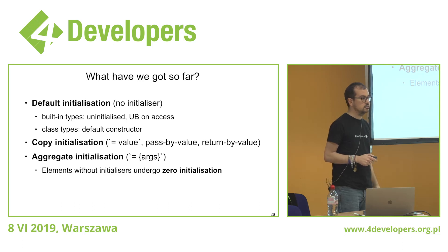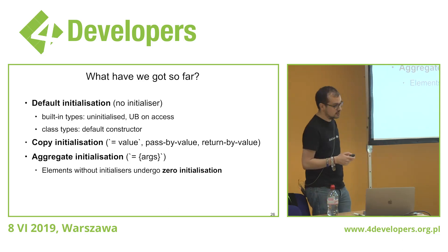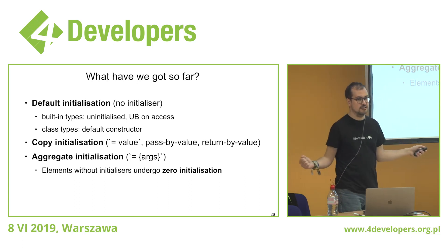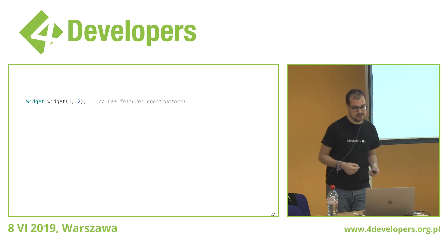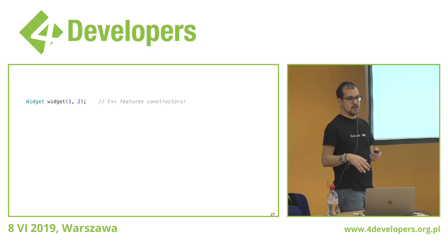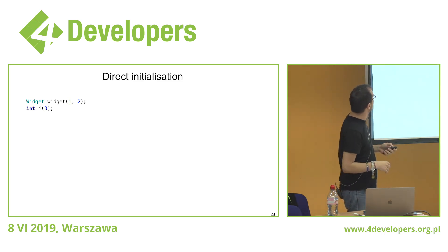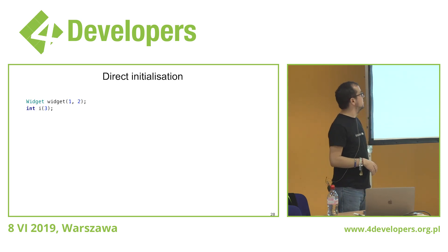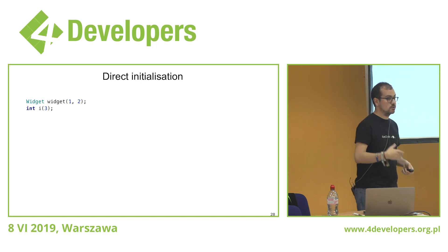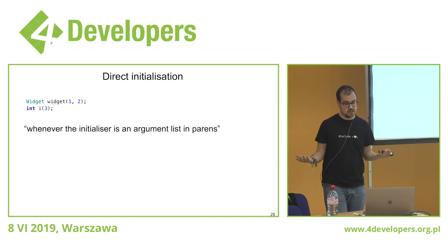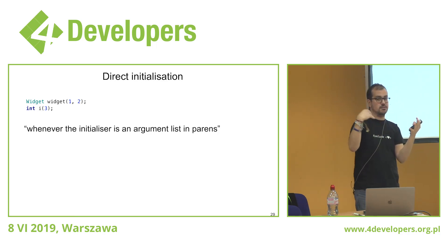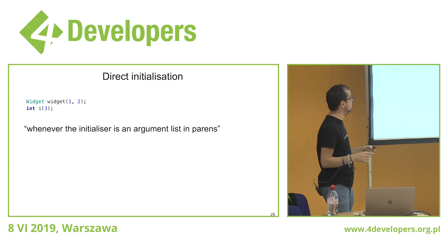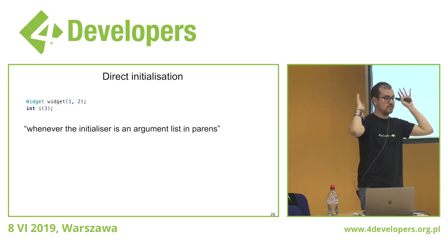C++ has constructors, which C doesn't. The syntax for calling them uses parentheses. If you have a class with a constructor that takes two arguments, you call it with parens. By analogy, you can also use the same syntax for integers and other built-in types. Anything you can initialize with paren syntax — whether user-defined or built-in — is called direct initialization. So direct initialization is whenever the initializer is an argument list in round parentheses. Parens equals direct initialization — easy to remember.